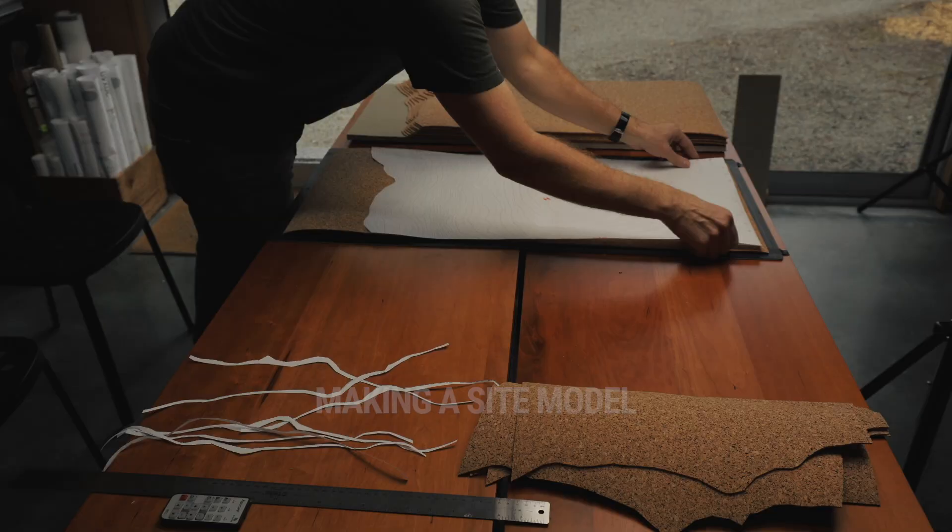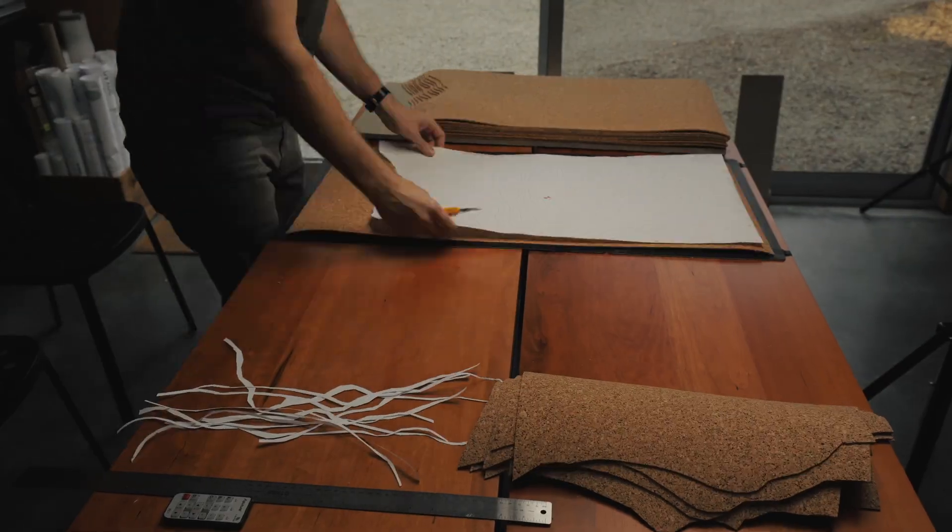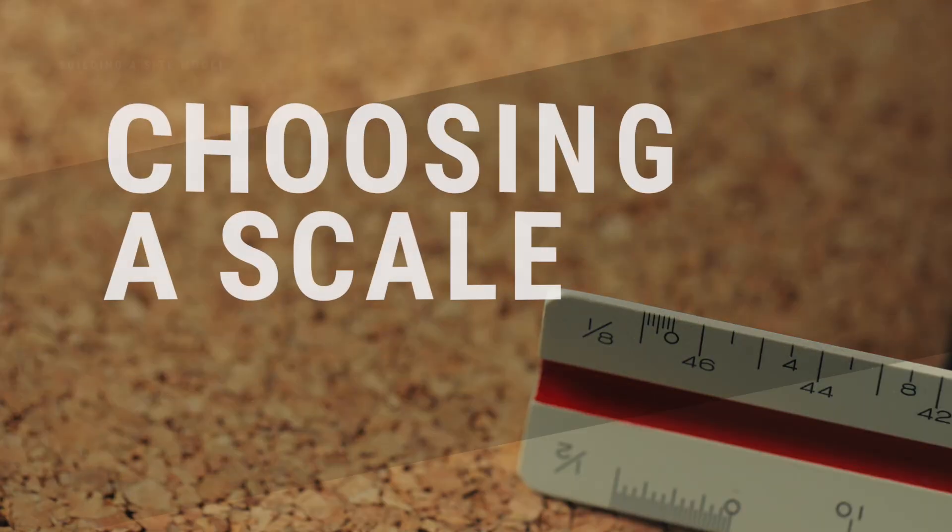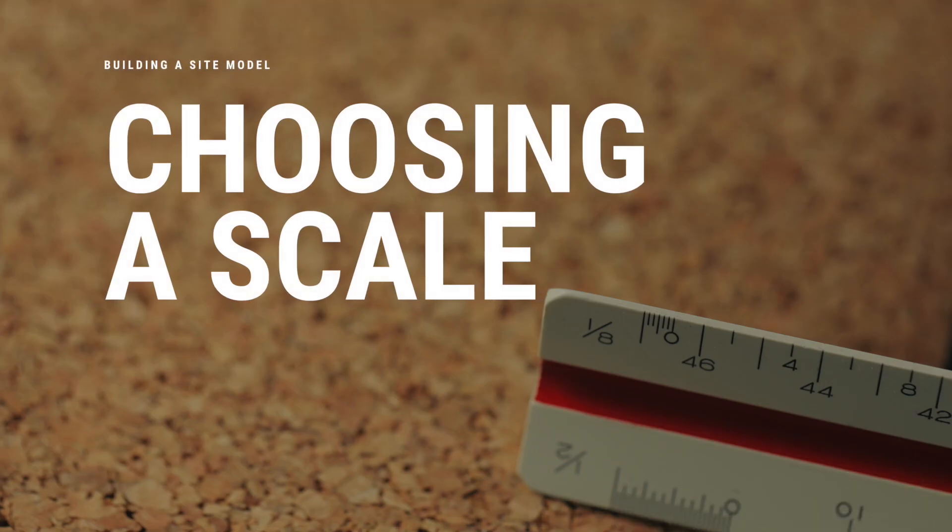Okay, so today we're doing a site model of the outpost project and I thought I'd show you my process. Our first step is to determine the scale of the model. I'm here at the computer because I'm going to be printing out a template that we're going to use to cut our contours and size our model base from.